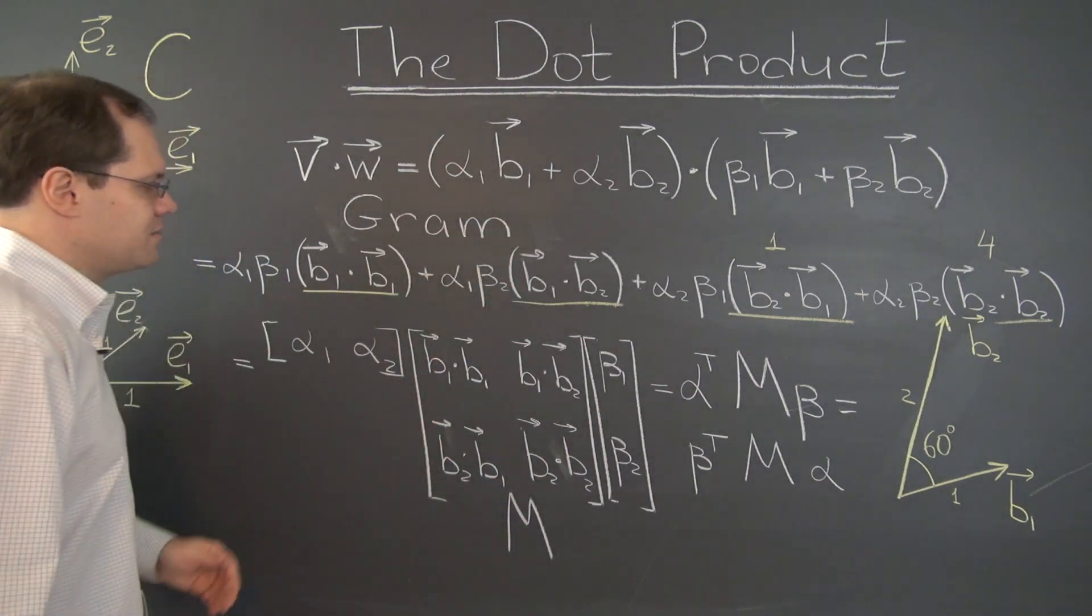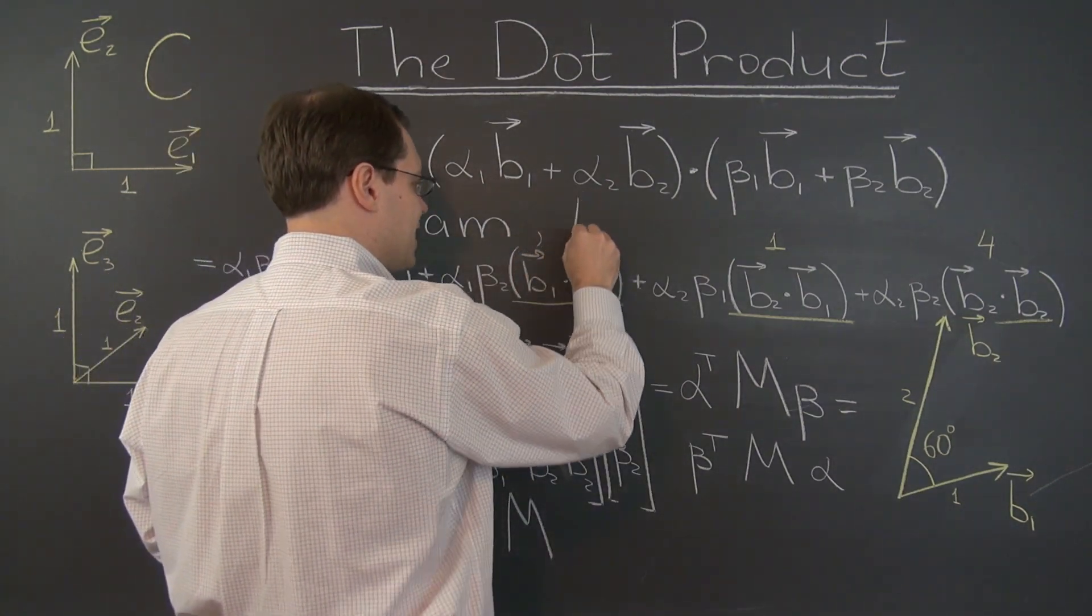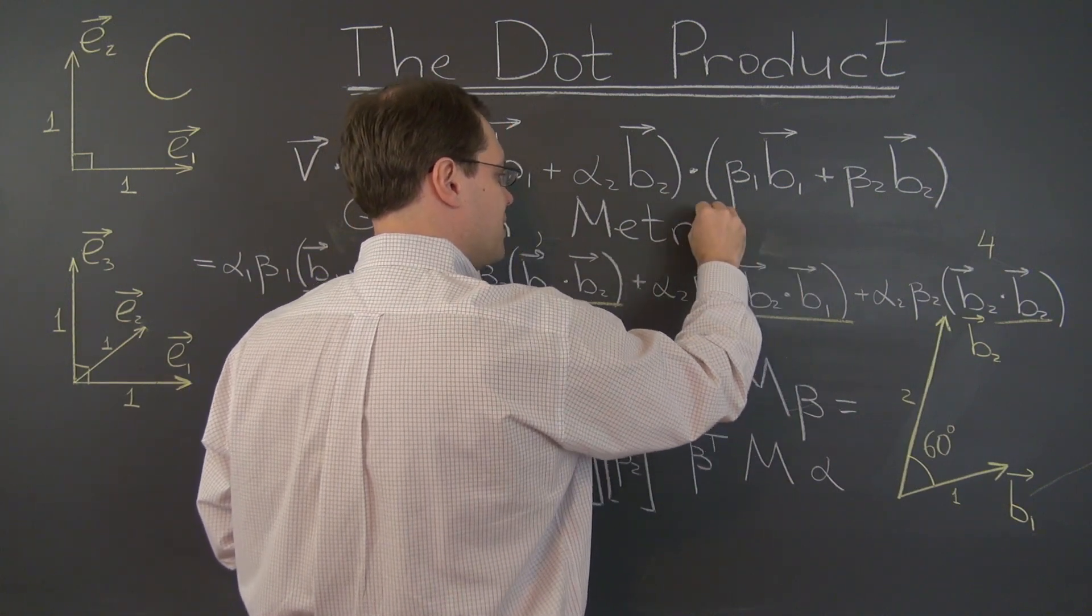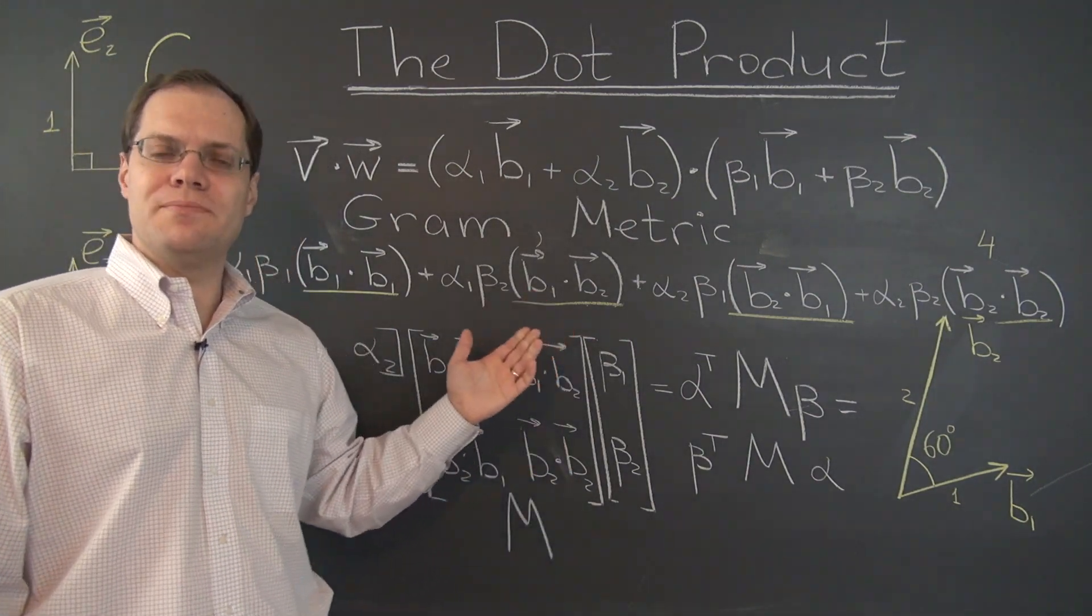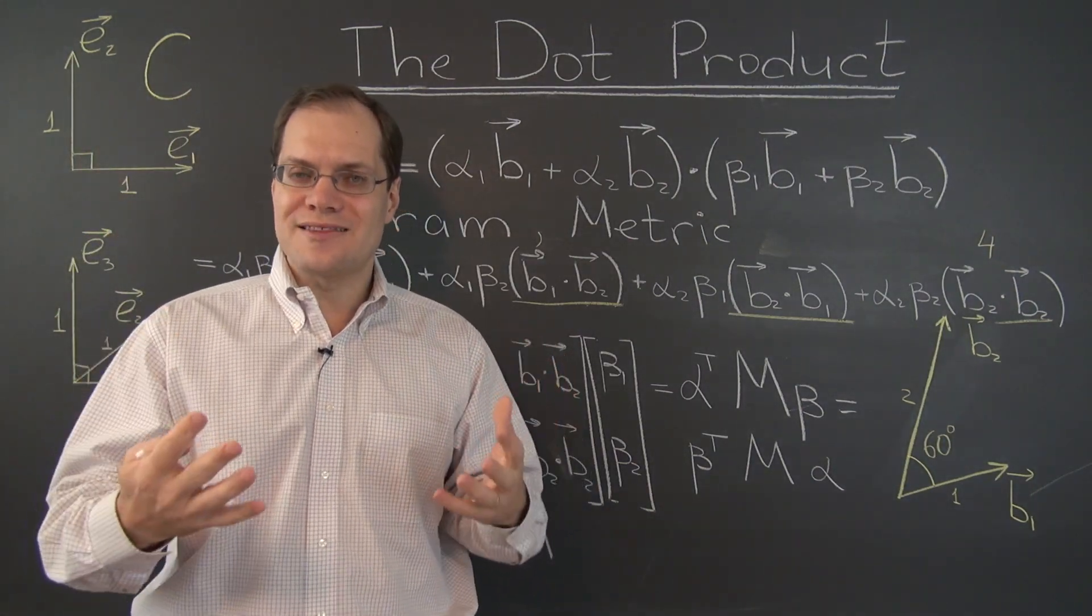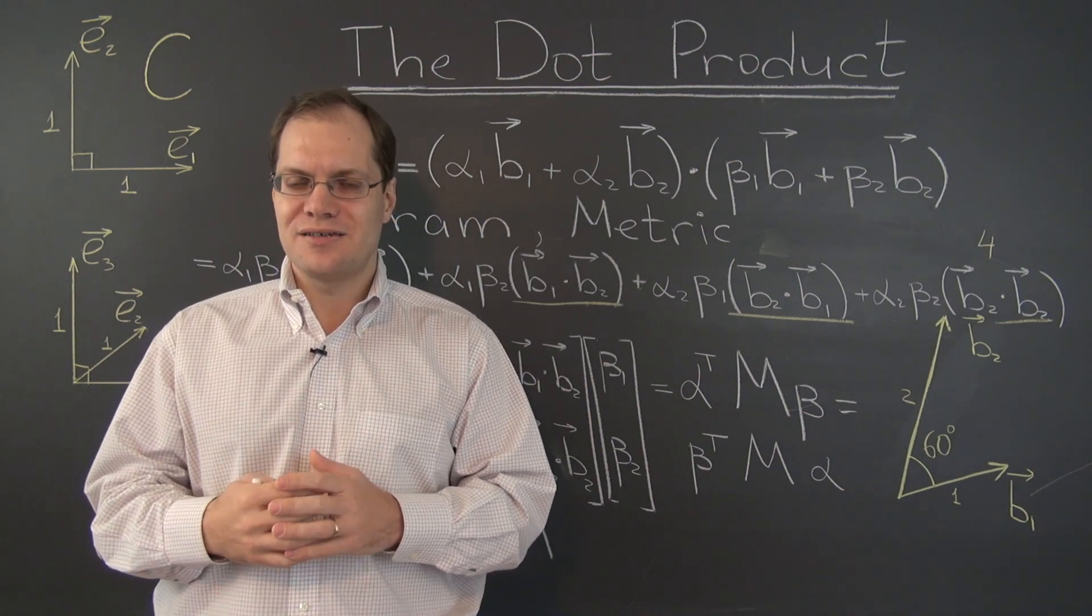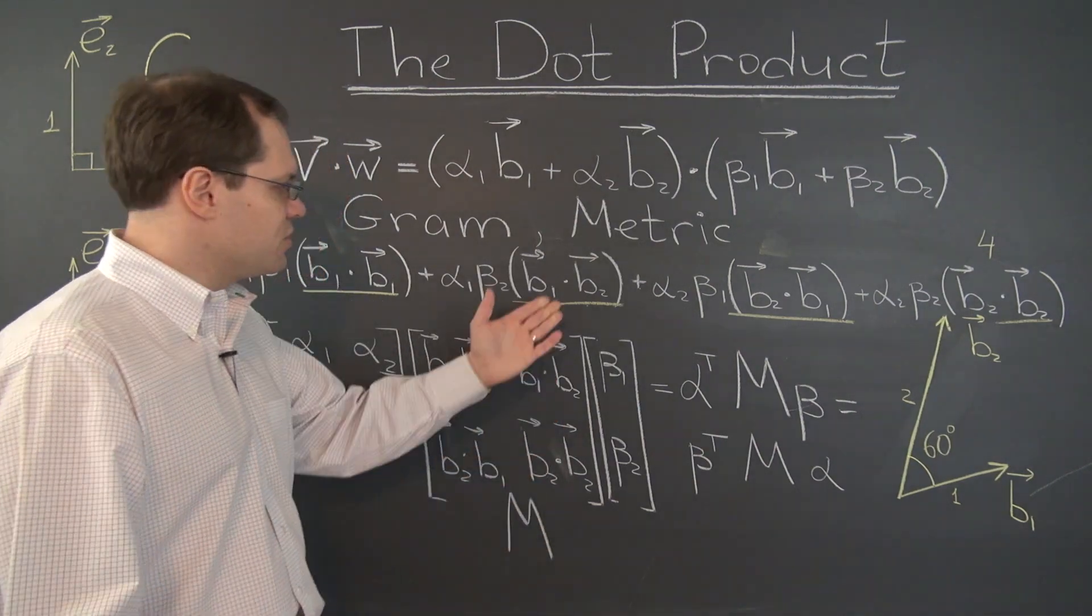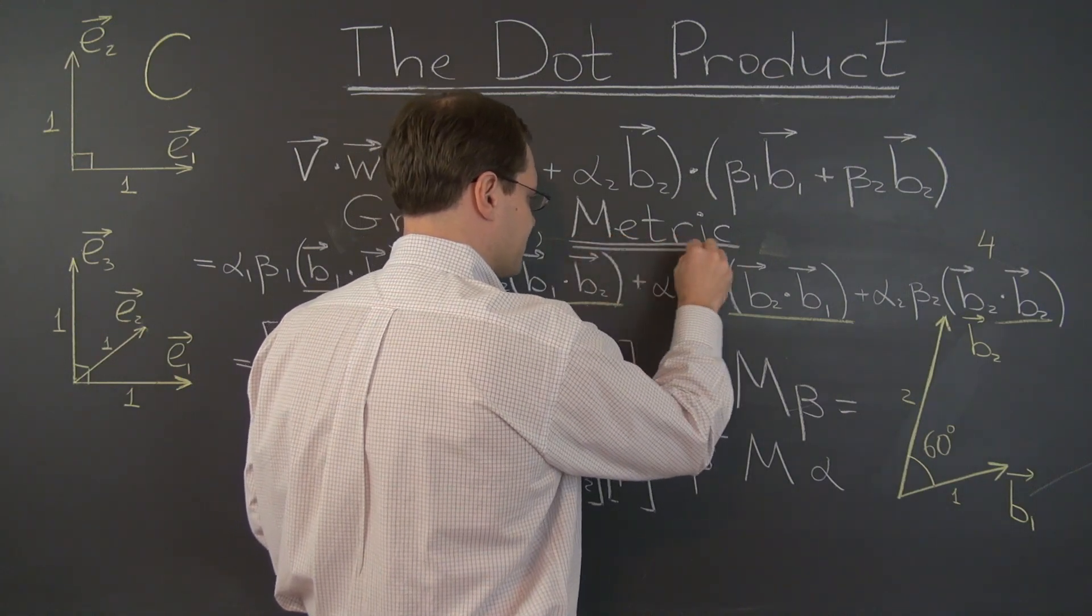It is also known as the Gram matrix, a name which will reappear when we talk about inner product. And another term that I prefer is metric. You can either call it the metric matrix or you can simply call it the metric. And it is called the metric because the dot product is responsible for lengths and angles, so it's about measuring things, it's about metrics. So it's the matrix that allows us to make all the measurements and so the term metric makes perfect sense and it's actually my favorite.